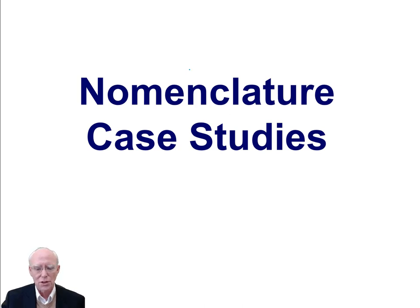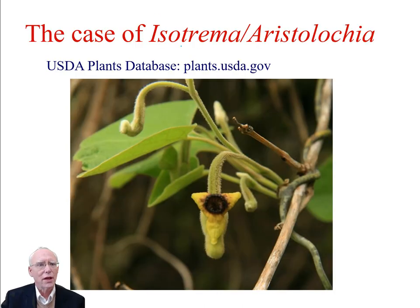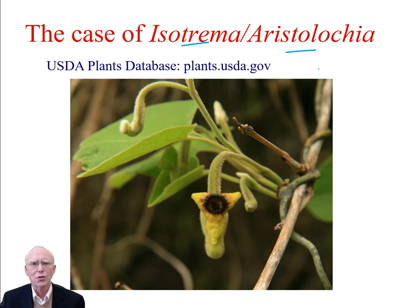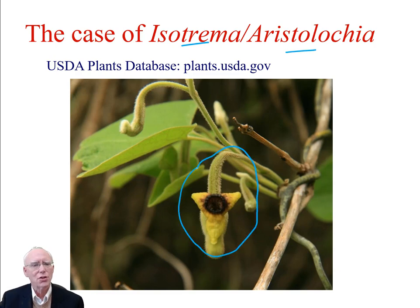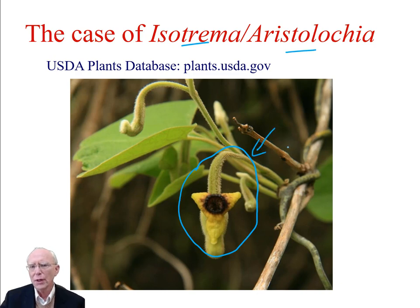Let's take a look at some nomenclatural case studies. We're going to start with the case of Isotrema or Aristolochia. There are different circumscriptions for these plants. These are viney plants, at least the ones occurring in the southeastern United States, the ones we're going to be talking about. There are two species which have sometimes been called Isotrema and sometimes Aristolochia.